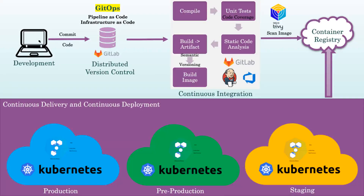The goal of GitOps is to make software delivery faster, more reliable, and more transparent, by using Git as a single source of truth for infrastructure and application code. By using GitOps, organizations can reduce the risk of human error, make it easier to manage and track changes, and ensure that their systems are always in the desired state.